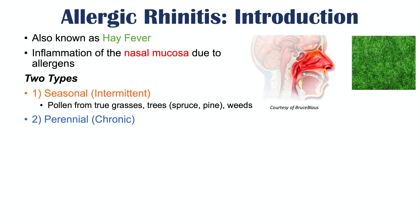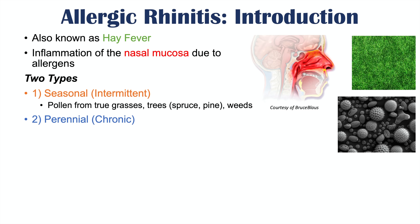The second type of allergic rhinitis is known as perennial or chronic allergic rhinitis. It's chronic or perennial because the allergens are going to be common throughout the year. These include mold spores, dust mites, and animal dander. These two types slightly differ in their clinical presentations.